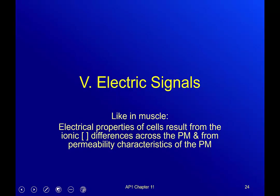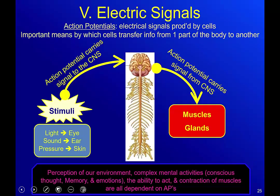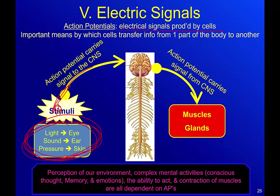Electrical signals, like muscle electrical properties, result from ionic concentration differences across the plasma membrane and from the permeability characteristics of the plasma membrane. Action potentials are electrical signals produced by cells — an important means by which cells transfer information from one part of the body to the other. Stimuli like light from the eye, sound from the ear, and pressure on the skin get carried through a sensory neuron to the central nervous system.